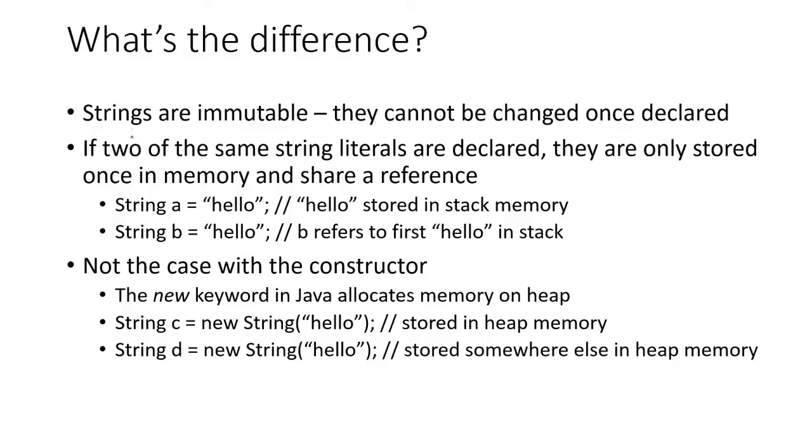So what's the difference between strings and other variables that you're used to? Well, strings are immutable, meaning they can't be changed once they're declared. So even if you use some method to concatenate it or get a certain part of it or change it in some way, all those methods are simply going to return new strings. They're not going to change the original one.